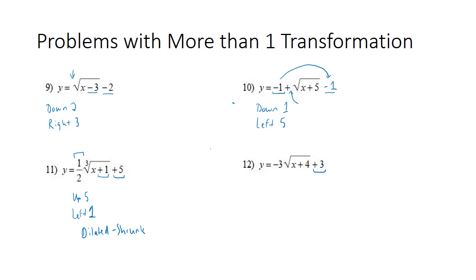Looking at number twelve, we have plus three, so it's gone up three. This plus four means it's gone to the left four. This three—we're gonna ignore the negative for right now—the three means it's been dilated, and since three is bigger than one, it's been stretched. And then since there is a negative here, it's also been reflected.